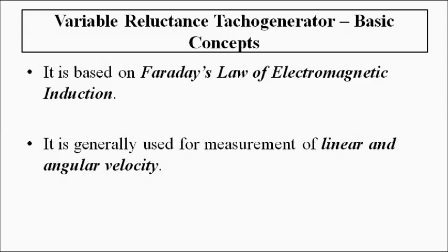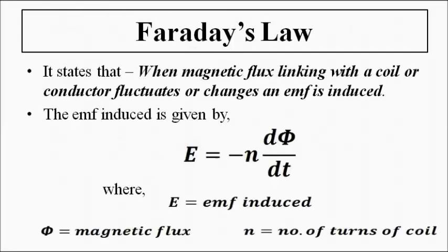Before discussing the basics or other things associated with the tachogenerator, let us first go through Faraday's law. Faraday's law states that when the magnetic flux linking with any coil or conductor fluctuates or changes with respect to time, an EMF is induced, and that EMF is directly proportional to the rate of change of flux. The mathematical expression is given by E = -N dφ/dt, where N is the number of turns of coil wound over the conductor and dφ/dt is the rate of change of flux with respect to time.